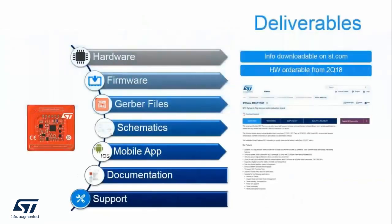In terms of deliverables, there is the actual hardware of the sensor tag itself, which can be bought online through distributors such as Mouser or DigiKey once available. On st.com, one can also download the firmware source code for the STM32L0, the Gerber files, the schematics, and mobile apps can be retrieved from iTunes and Google Play. Documentation and full application engineering support is also available in terms of sensors, microcontrollers, and NFC.